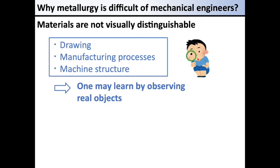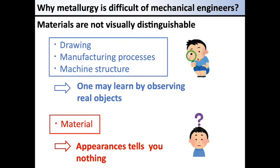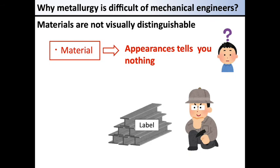Materials are not visually distinguishable. For example, you may learn about drawings, manufacturing processes, and machine structure by observing real objects. However, in the case of materials, you cannot visually judge the impurities contained in an alloy. Even if you gaze at the actual object, the appearance tells you nothing about the material properties. As a solution to this problem, technicians in workshops are labelling the shelves of the storage of materials, or writing directly on the material.